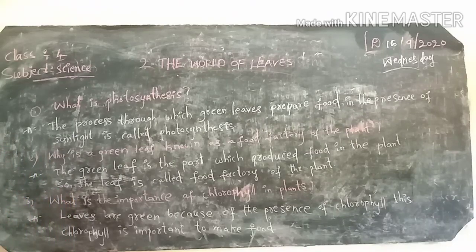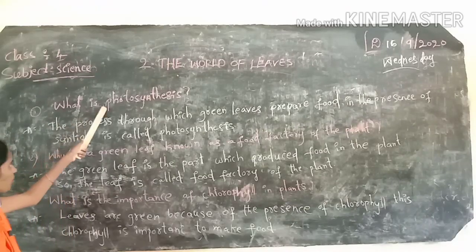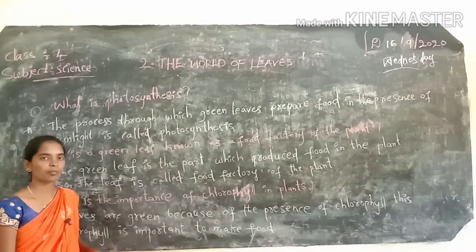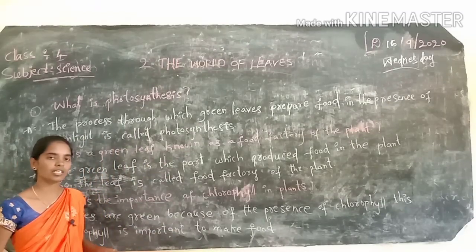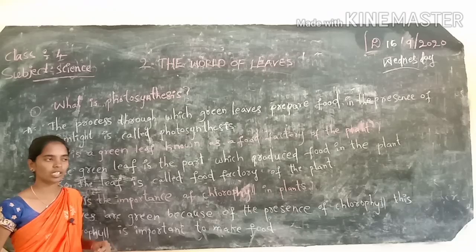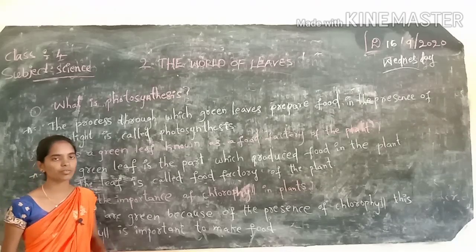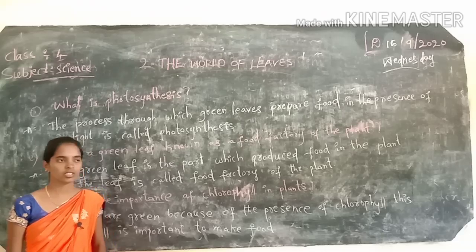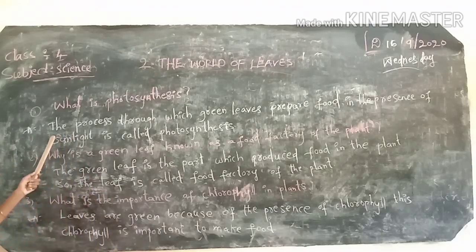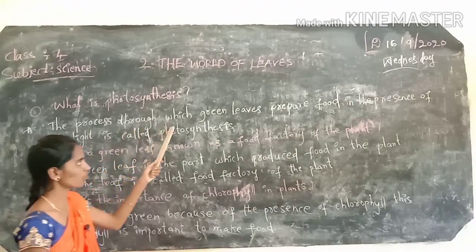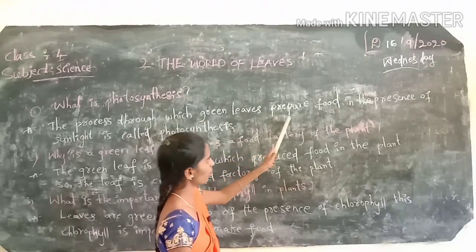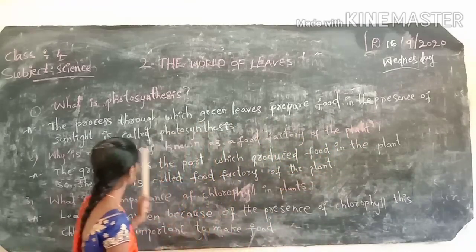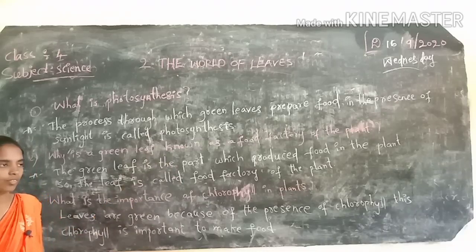Look here. First question: What is photosynthesis? We know that in the presence of sunlight, green leaves make food. That is called photosynthesis. So the answer is: the process through which green leaves prepare food in the presence of sunlight is called photosynthesis.